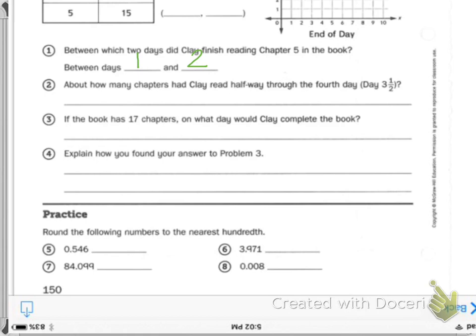Then it says, if the book has 17 chapters, on what day would Clay complete the book? I'm going to give you a hint here. Look at your Ys and see how much they jump. You have 3, 6, 9, 12, 15. So if there are 17 chapters, when is that going to happen? How am I going to get from 17 to 15?